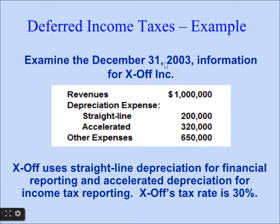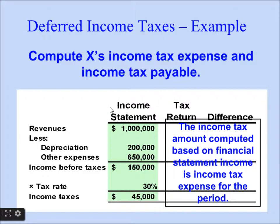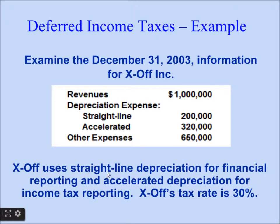Examine the December 31, 2003 information of XIN. Revenue is $1 million. Depreciation expense: straight-line depreciation is $200,000, and accelerated depreciation is $320,000. Other expenses are $650,000. The company uses straight-line depreciation for financial reporting and accelerated depreciation for income tax reporting. The tax rate is 30%.